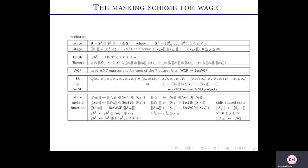This is an algorithmic overview of the entire masked WAGE. The feedback can be computed in parallel because all are linear operations over the shares. Only in the intermediate state update step do the cross-share terms appear.